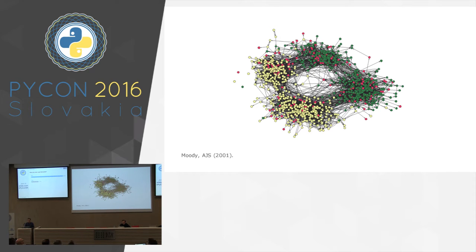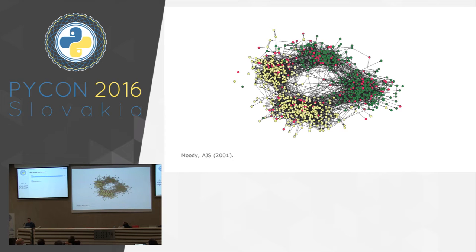Here's another reason why networks are so interesting — you have these great pictures. This is a friendship network of an American high school. These are all 13-year-olds, and a sociologist did this study in 2001. The nodes are individual 13-year-olds, and the links between them indicate friendship. The yellow nodes are white students, green nodes are African-American students, and red nodes are students of mixed race. You see immediately a big story — there's racial segregation. Within the two groups, you also see a gender split, which is maybe not so surprising for 13-year-olds.